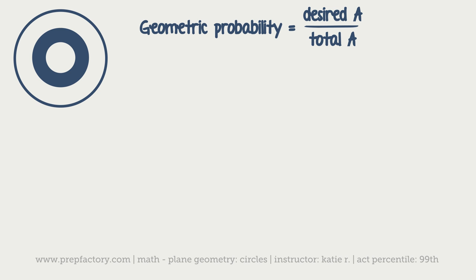Let's use those formulas on a more complicated problem. I drew a series of circles like a dartboard. Geometric probability is your desired area over your total area — the same as normal probability, just using areas. A person throws darts at a dartboard. We assume there's an equal chance of the dart landing anywhere on the board — they're not aiming, or if they are, they're terrible. We want to find the probability of a dart hitting the blue shaded circle.